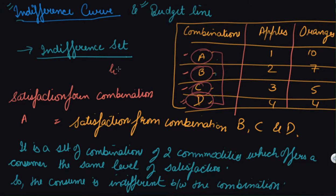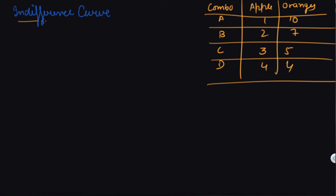It is upon the consumer's wish which combination they want to choose, but the satisfaction they get will be the same. Our main objective is to find, from these sets, the combination that gives equilibrium to the consumer. These sets give equal levels of satisfaction, but from these combinations we have to find the one at which the consumer is at equilibrium. This is the indifference set.